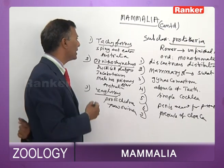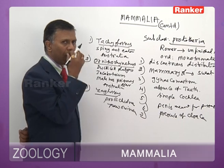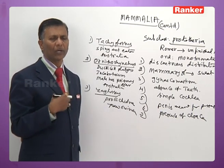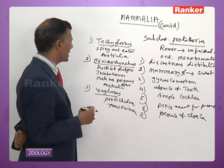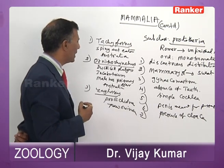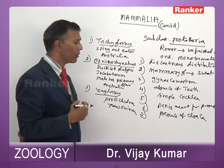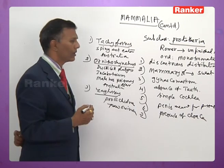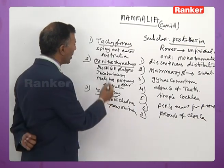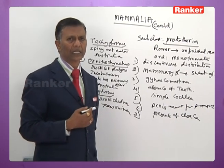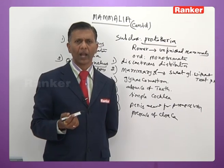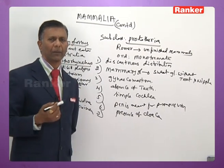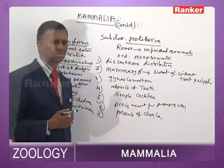So Prototheria is represented by three examples: Tachyglossus (spiny echidna), Zaglossus (pro-echidna), and Ornithorhynchus (duckbill platypus). They all exhibit reptilian characters, mammalian characters, and unique characteristics of Subclass Prototheria.